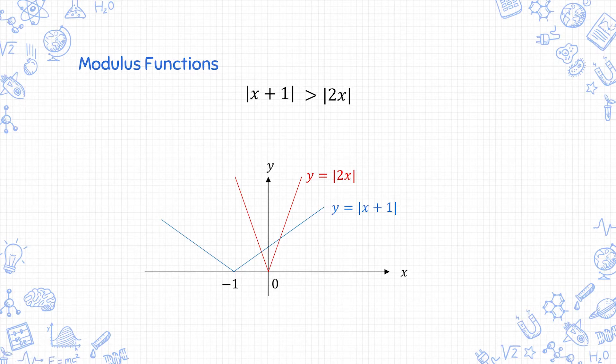If the graph has more than one intersection point, I would label them as a and b for easier reference. You are trying to solve mod of x plus 1 greater than mod of 2x. Or in other words, the parts where the blue graph is above the red graph.